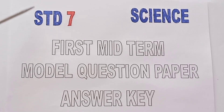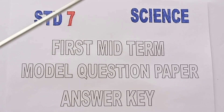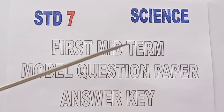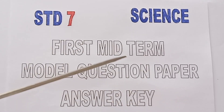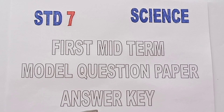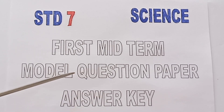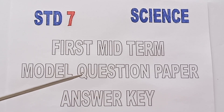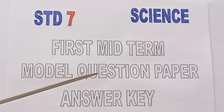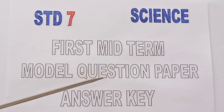Manakamana Virgile Standard 7 Science 1st Midterm Model Question Paper Answer Key. Units 1, 3, 5, 6. Total marks: 50.